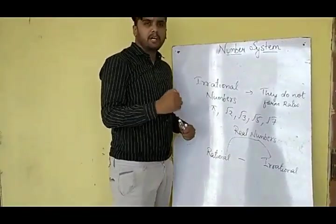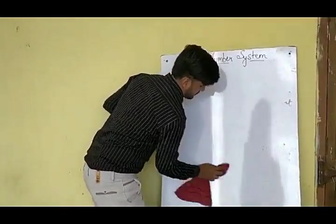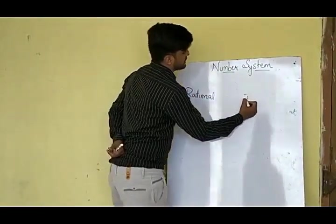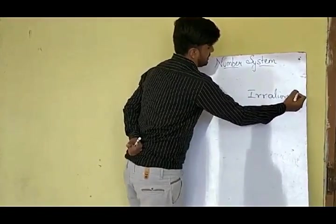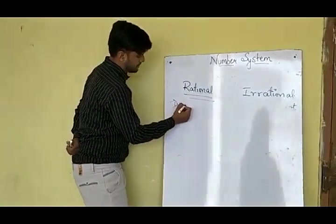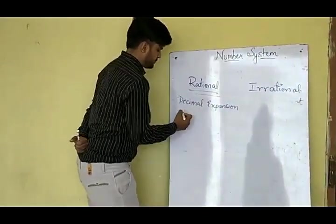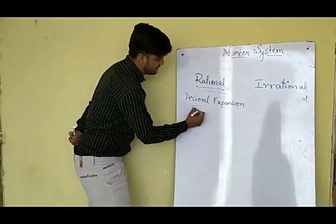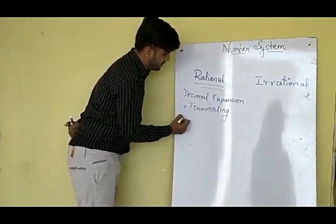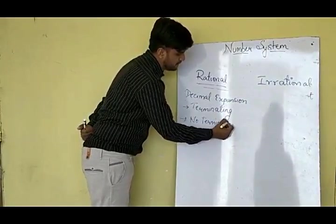Now we will further study rational numbers. Rational numbers are numbers whose decimal expansion is either terminating, or non-terminating and recurring. Whereas, the decimal expansion of irrational numbers will always be non-terminating and non-recurring.